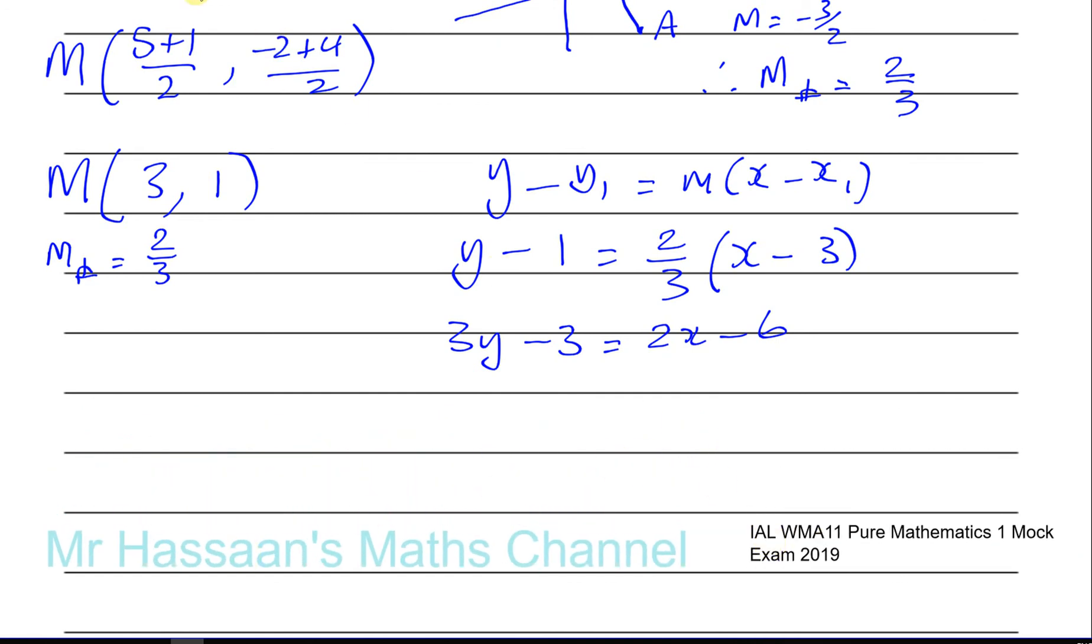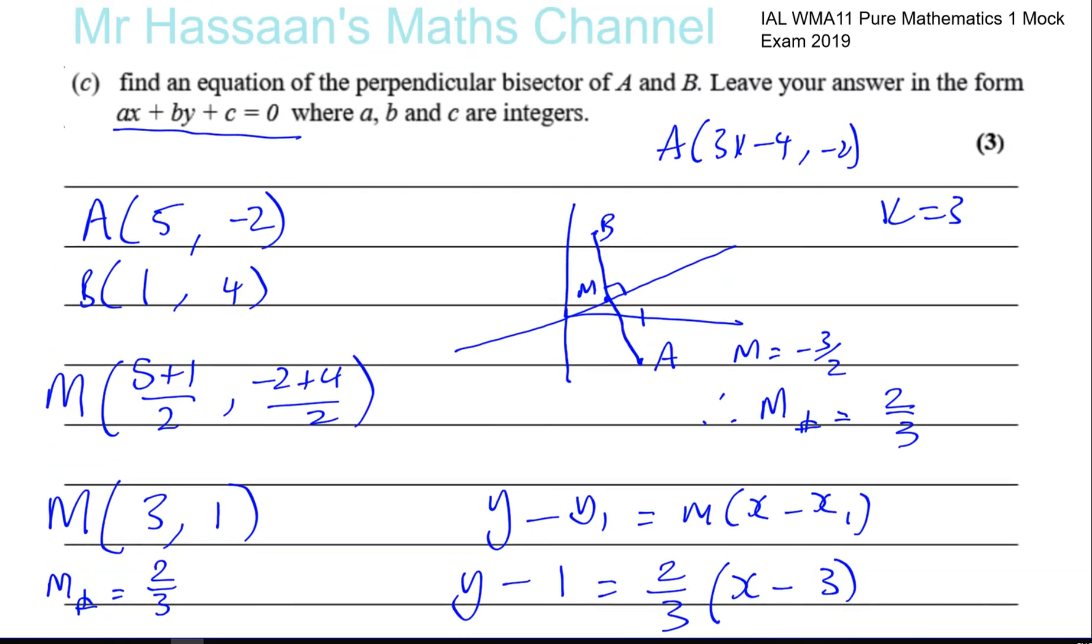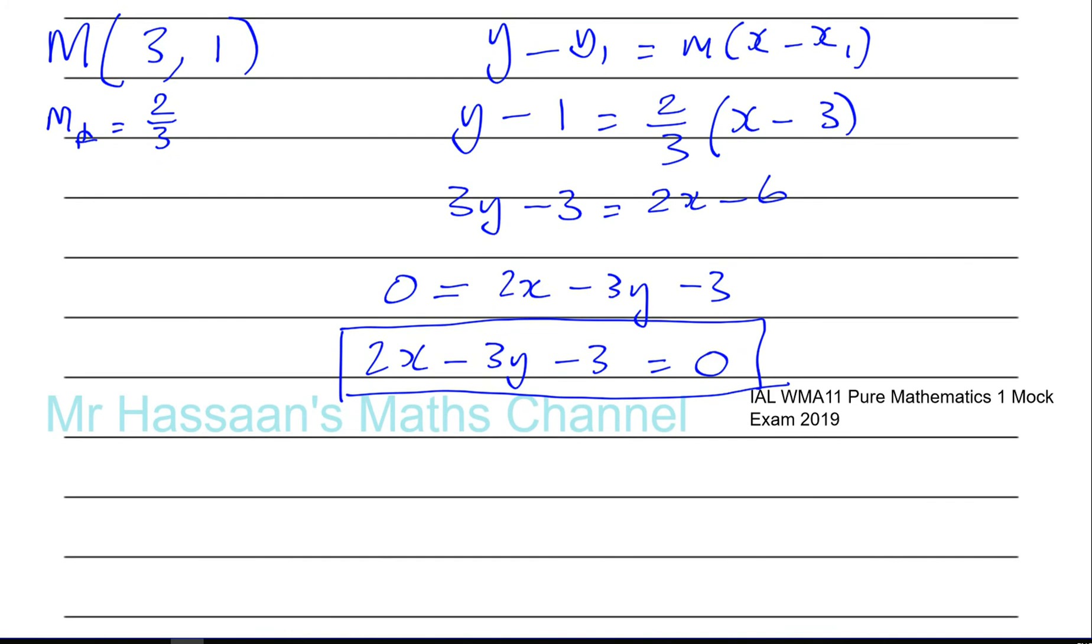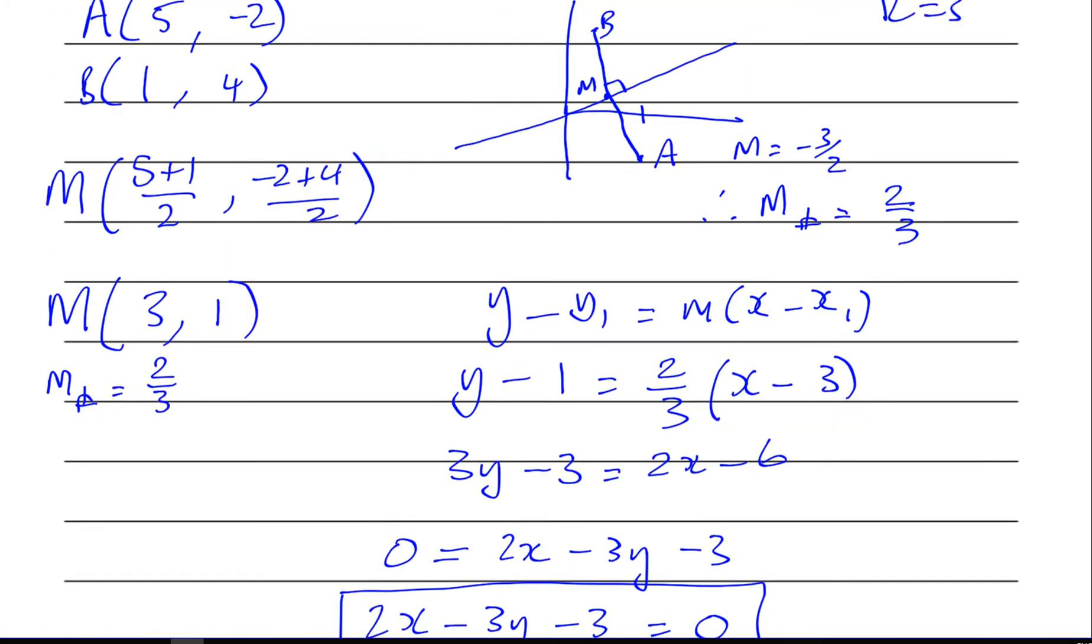And now we can write it in this form. I like to keep the x term positive. So what I'm going to do is I'm going to leave this sign here 0. And I'll have 2x. I have -3y. And -6 + 3, which is -3. So in the end I can say 2x - 3y - 3 is equal to 0. Okay. I could have said 3y - 2x + 3 equals 0. And that would have been perfectly fine. I just prefer to keep the x term as a positive. And there we have our answer. Okay. In the form ax + by + c equals 0. With a, b, and c are integers. Okay. So we have now finished this question and finished the whole of this mock paper.